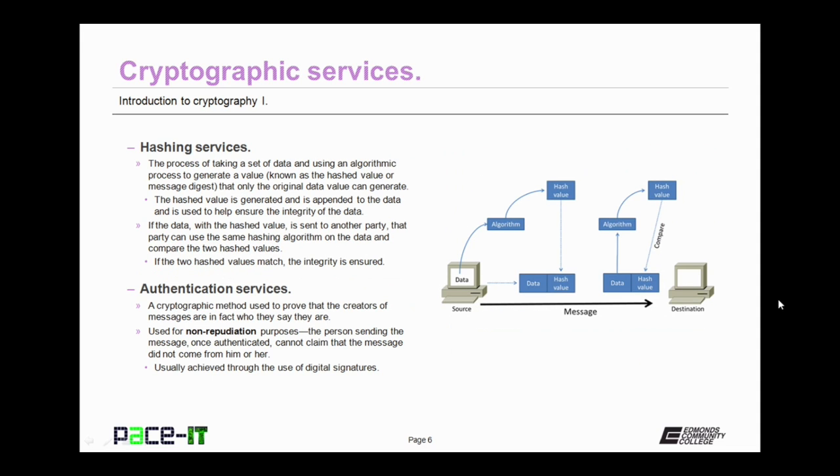Hashing is the process of taking a set of data and using an algorithmic process to generate a value that only the original data value can generate. This generated value is known as the hashed value or message digest. The hashed value is generated and is appended to the data and it is used to ensure the integrity of the data. If the data with the hashed value is sent to another party, that party can use the same hashing algorithm on the data and compare the two hashed values. If the two hashed values match, the integrity is ensured.